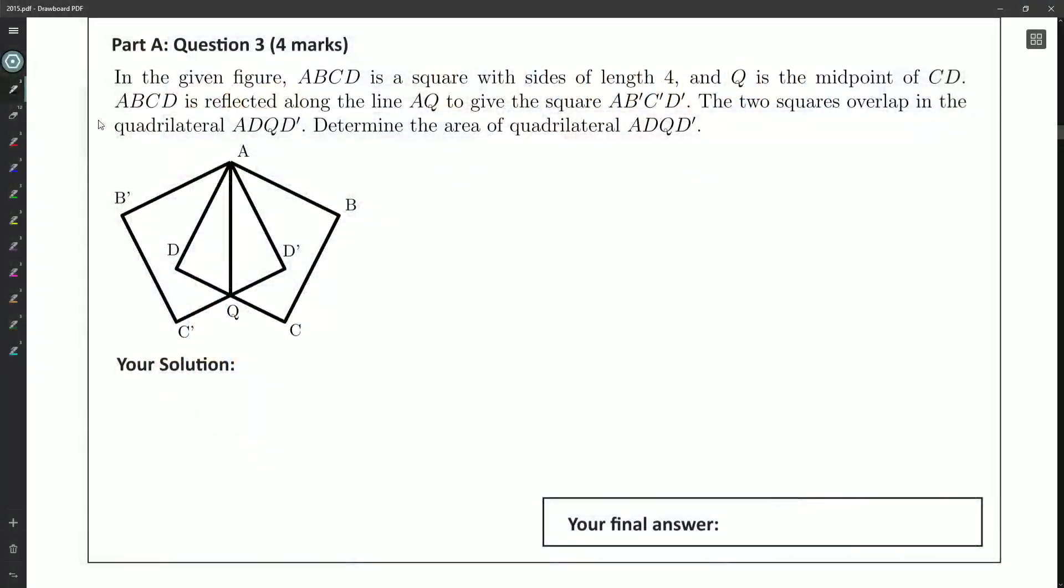So what have we got in the given figure? ABCD is a square with side length four. So A, B, yes, there's C, D, and then there's, so we got four there. Q is the midpoint of CD.